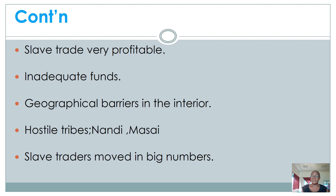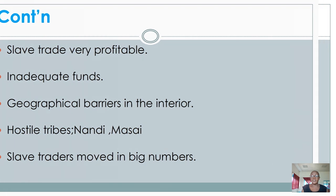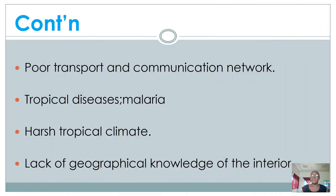The slave traders moved in large numbers, which gave them protection against the abolitionists. Additionally, by the time they were trying to stop the slave trade in East Africa, the transport and communication network had not been developed, so abolitionists had to pass through forests, which took a long time to get into the interior, and this was a significant challenge.